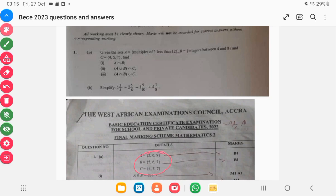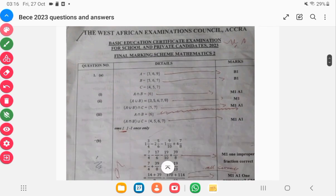If we scroll down, we see that A intersection B is 6. Then A union B has been stated, A union B close bracket intersection C has also been stated. Then A intersection B has been stated, and so on. You realize the marks were given as bonus marks and then method marks as well as the answers.